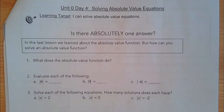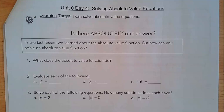All right, so we're at day four. We've got absolute value equations. Yesterday we did absolute value graphs — graphing what happens if you have an absolute value with some shifts, some slides, some flips. Today, instead of an absolute value equaling y, we're going to have it equal a number, which means you can solve for it.